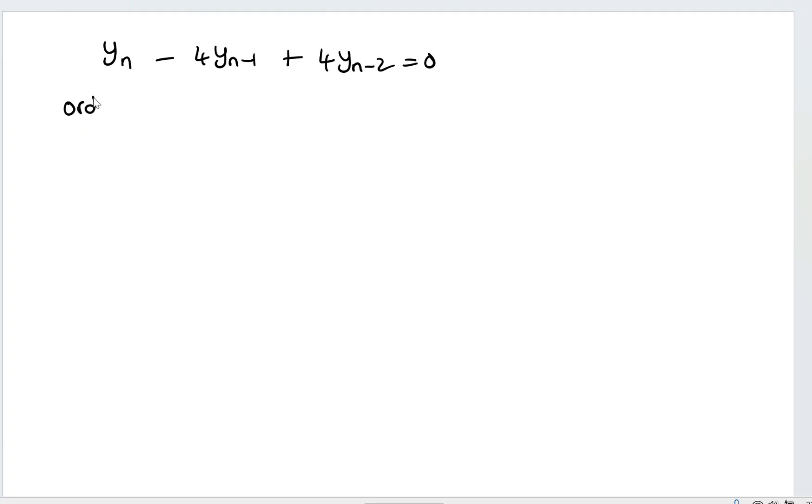So before you do that, what is the order of this difference equation? We'll have to take the highest subscript, subtract the smallest subscript. So I'm going to get n minus (n minus 2), which is n minus n plus 2, which is equal to 2.